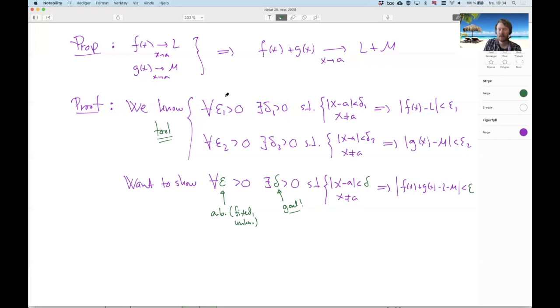So if I put epsilon equal to epsilon 1 equals 1 here, I will get a delta 1. If I put epsilon 1 equal to green epsilon, I will get a delta 1 here. If I put this thing here equal to green epsilon plus 1, I will get a delta here. So this is a machine or two machines that I know work. And this is a machine I want to prove that works.